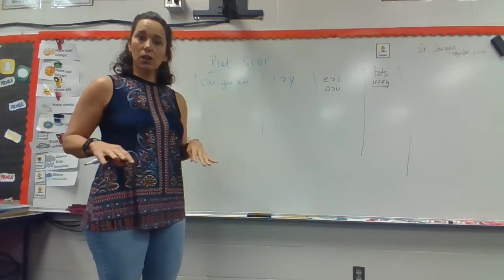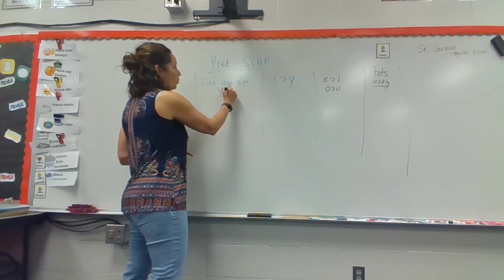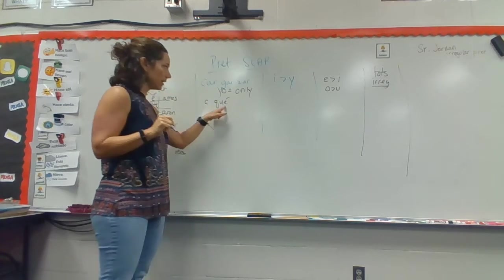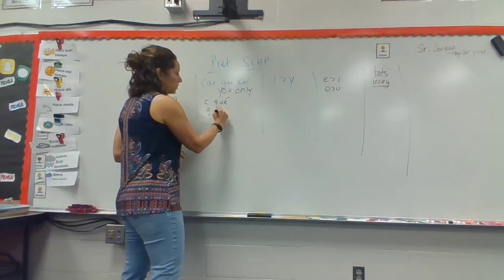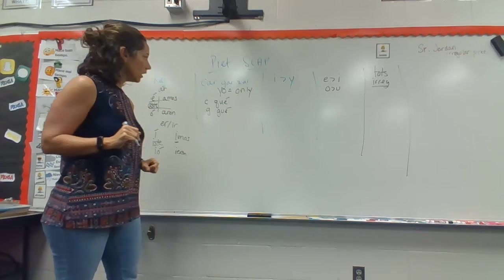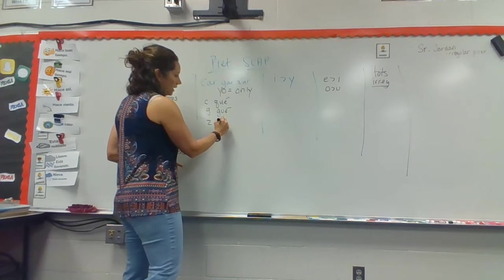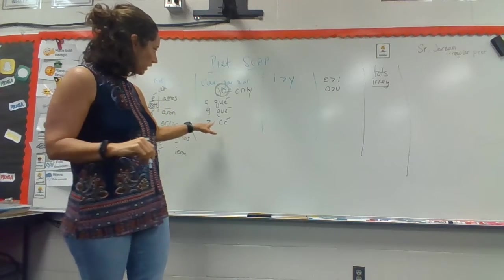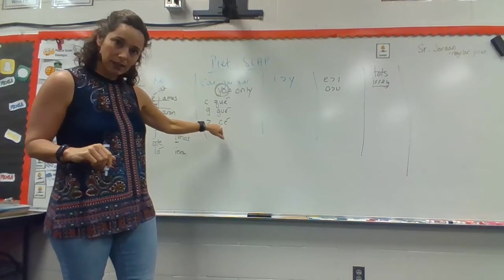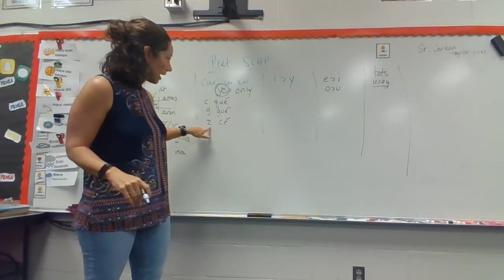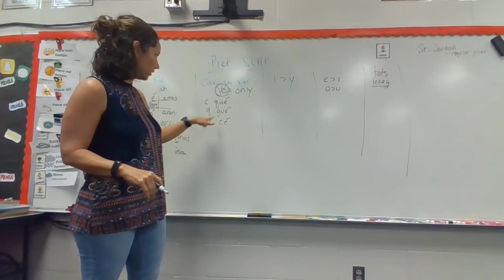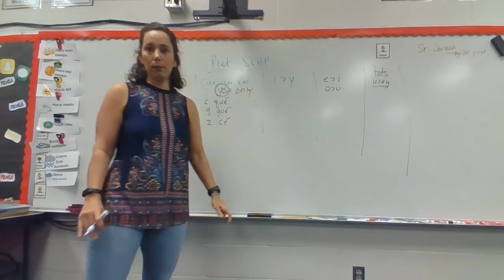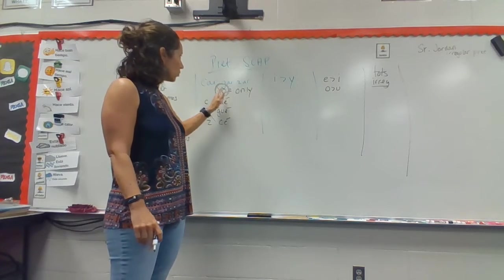Next issue is the kar, gar, zar. These are spell changes only in the yo. Yo only. C becomes QU with that E ending. The gar verbs become G-U-E with the E accent mark ending. And the Z becomes C. And it's only in the yo. So I ate lunch with my friends. Yo almorcé. We all ate lunch together. Almorzamos goes back to the Z. Yo llegué a tiempo, pero tú llegaste tarde. Whatever it might be. Spell change only in the yo.